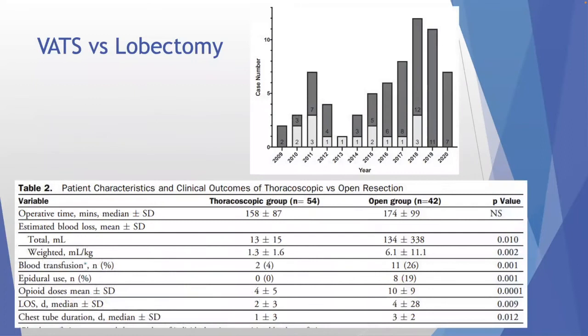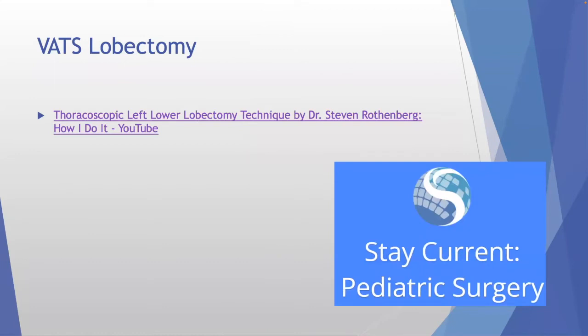From a pain and opioid standpoint, Tylenol and local anesthesia work very well — minimal or no narcotics needed. Regarding Exparel, it's FDA-certified down to age six, so it can't be used in younger infants — likely not yet studied for younger age groups rather than a safety concern.